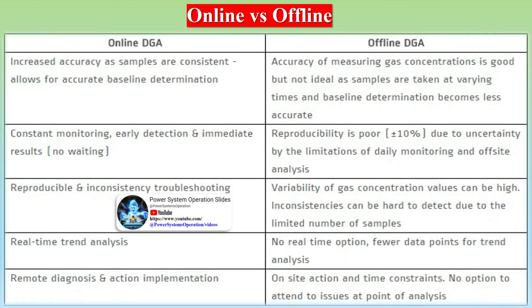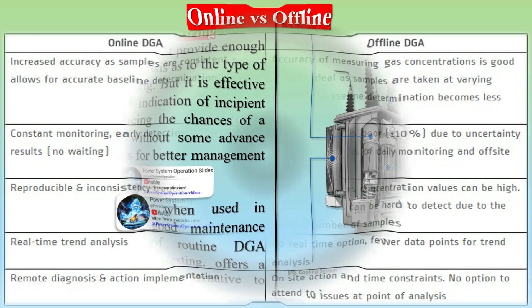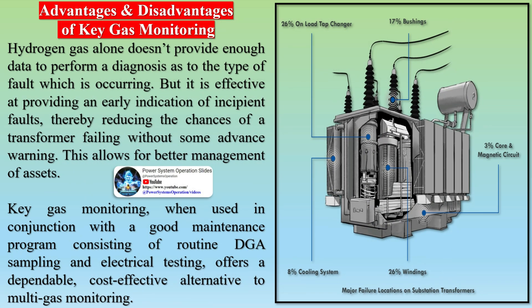Rogers' ratio was developed from Halstead's thermal equilibrium and Dornenberg ratios, together with information gained from failed units. It was refined to three ratios which, when compared, can be used to diagnose six possible faults. Rogers' ratio method has the advantage that it is quantitative and is independent of oil volume, and can therefore be used as a diagnostic tool on any oil-filled transformer.